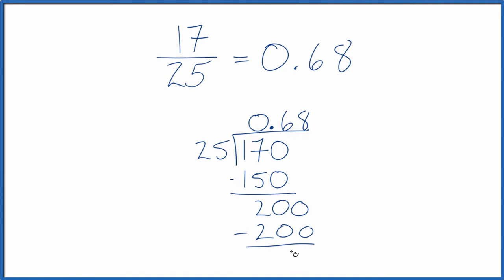We subtract, no remainder. So 17 divided by 25 is 0.68. And that's what we found earlier. So the fraction 17 25ths equals the decimal 0.68.